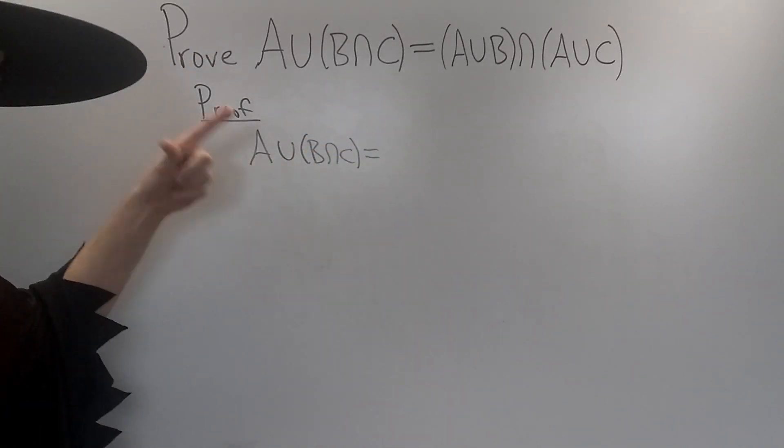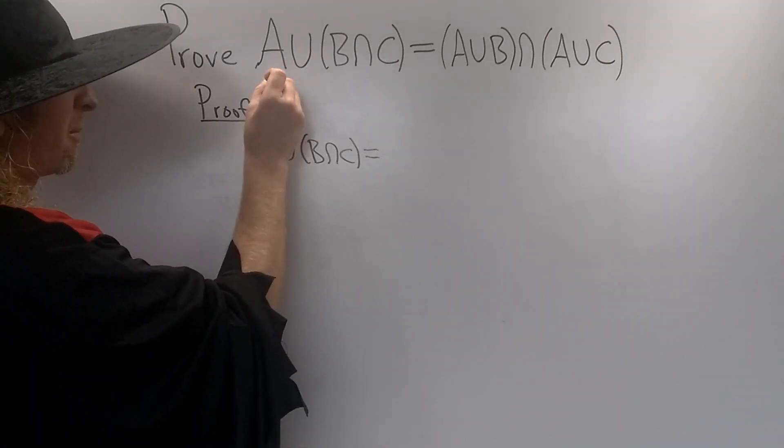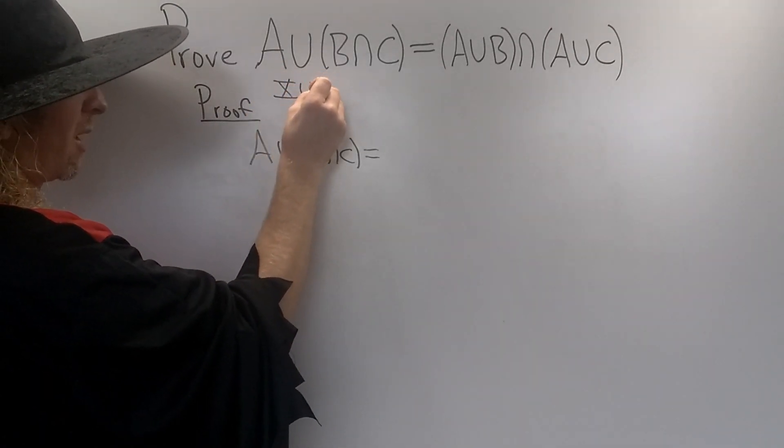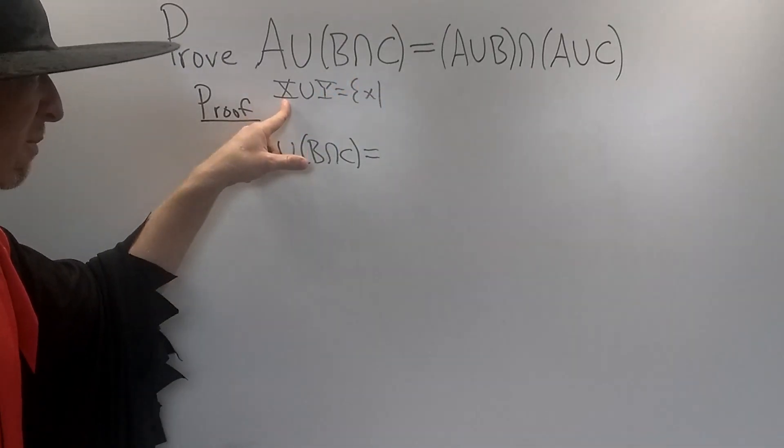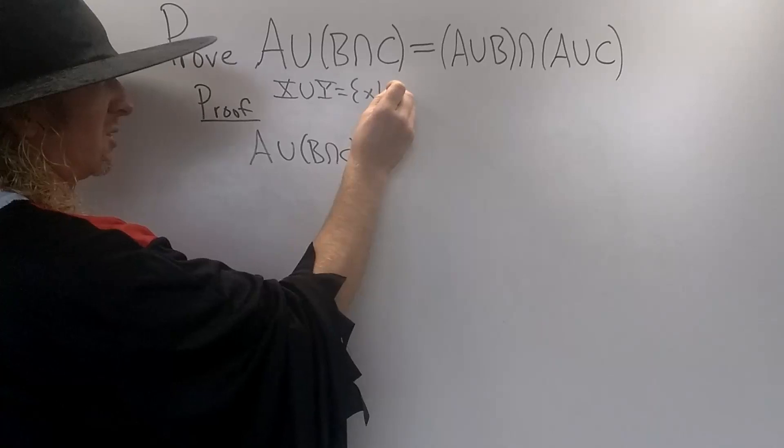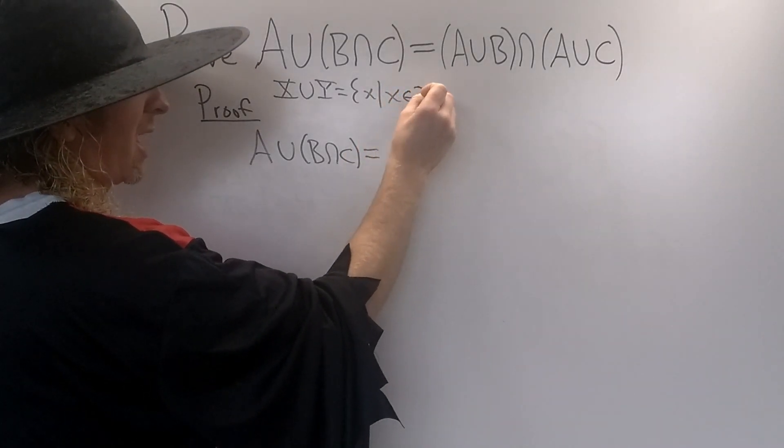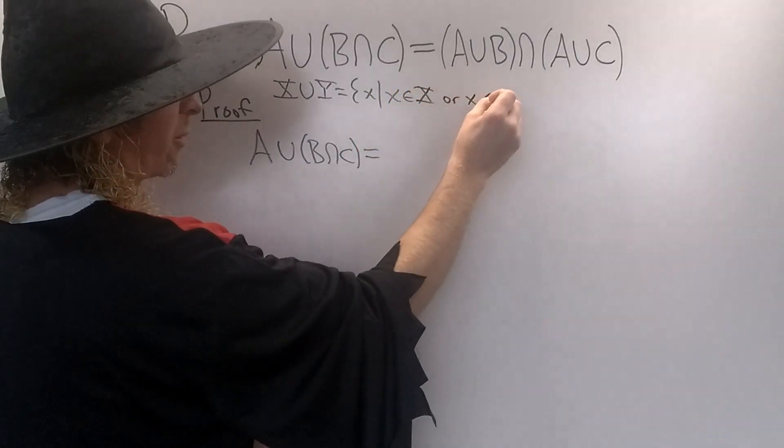What is union? Let me explain that here. If you have capital X union capital Y, that's equal to the set of all x such that x is in capital X or x is in capital Y. So there's an or involved.